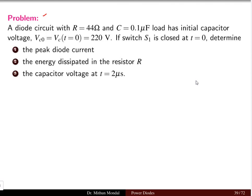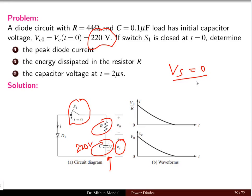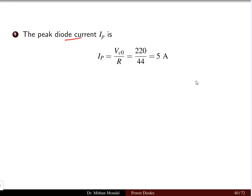Let us solve a problem to understand the RC load switched diode circuit. The resistor value is 44 ohms and the capacitor is 0.1 microfarad. The initial capacitor voltage is 220 volts and the switch is closed at time t=0. We need to determine the peak diode current, the energy dissipated in the resistor, and the capacitor voltage at t=2 microseconds. Since VS=0 and the capacitor is initially charged to 220 V, the peak diode current equals the initial capacitor voltage divided by R: 220/44 = 5 amperes.